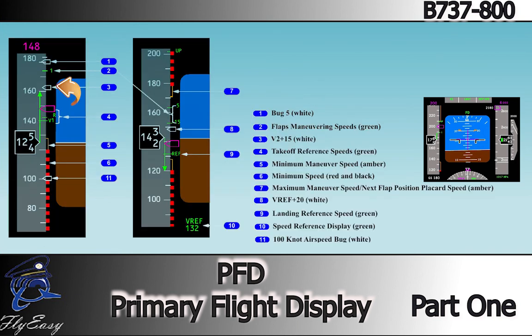The takeoff reference speeds are shown along the right edge of the airspeed tape. These values are the same as those on the takeoff ref page of the FMS. The maneuvering speed for flap retraction or extension is displayed for each flap setting; these flap speed indications are not displayed above approximately 20,000 feet. The approach and landing reference speed is shown along the right edge of the airspeed tape, matching that selected on the approach ref page of the FMS.